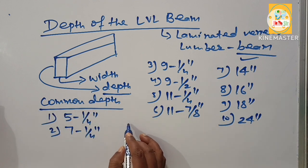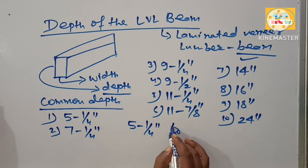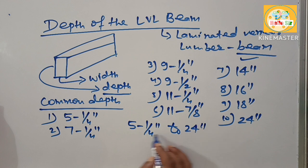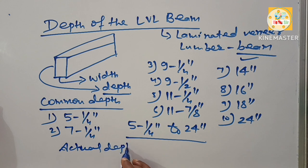The range is from 5¼ inches to 24 inches. These are the actual sizes and actual depths, while the nominal depths of LVL beams increase differently.